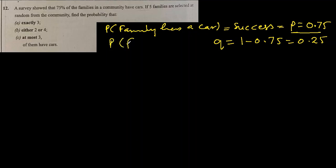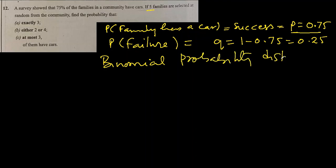So probability of failure—failure to get a family with a car. Now, the number of selections are 5, which are definite, and the probability of 0.75 is constant, and they are all independent choices, selections. So all four conditions for binomial probability distribution are there. Check, check, check, check. Four conditions, all four are there. So we can use binomial probability distribution here.